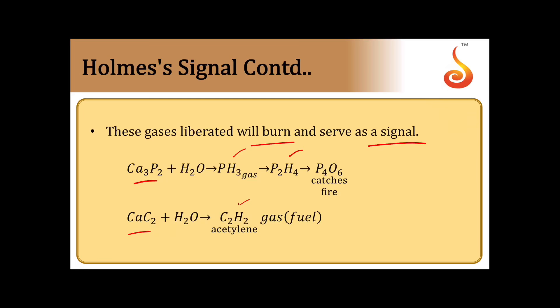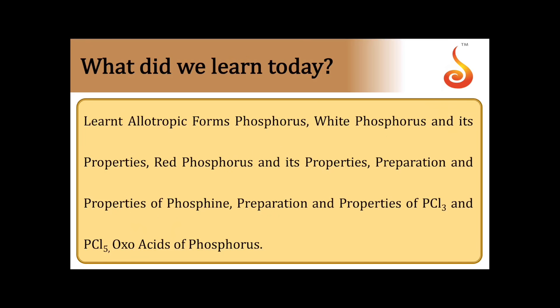So we have come to an end. Today we have learned the allotropic forms of phosphorus — white, red, and black phosphorus — along with the preparation and properties of phosphine gas, the properties of PCl3 and PCl5, and the oxo acids of phosphorus.